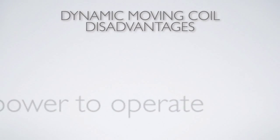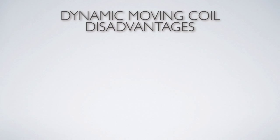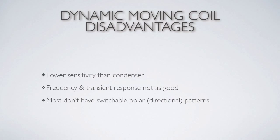The moving coil has these disadvantages: lower sensitivity than a condenser, meaning the signal-to-noise is generally not as good. The frequency and transient response is also not as good — not as flat, or the range of frequencies it can respond to is more limited. If you're doing acoustic measurement, you'd probably never use a moving coil because it's just not accurate or flat enough.